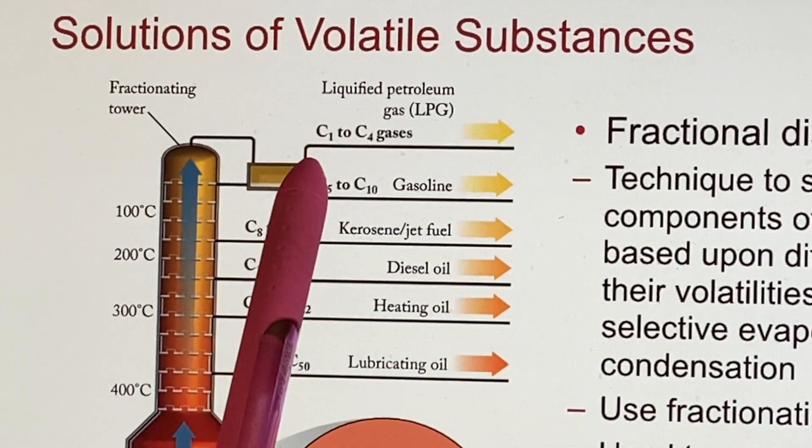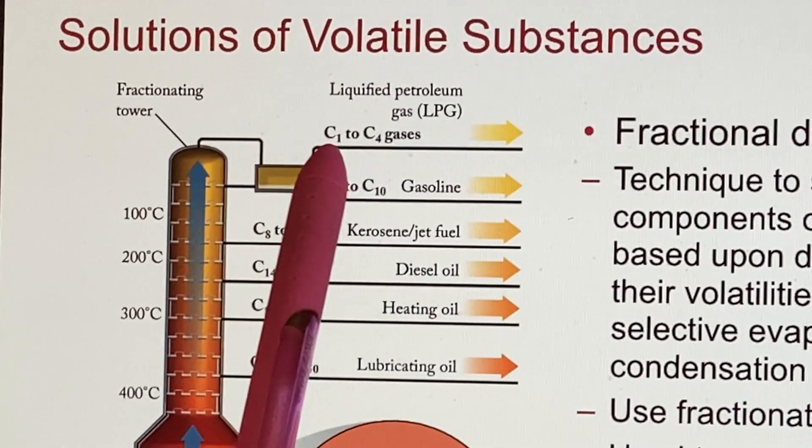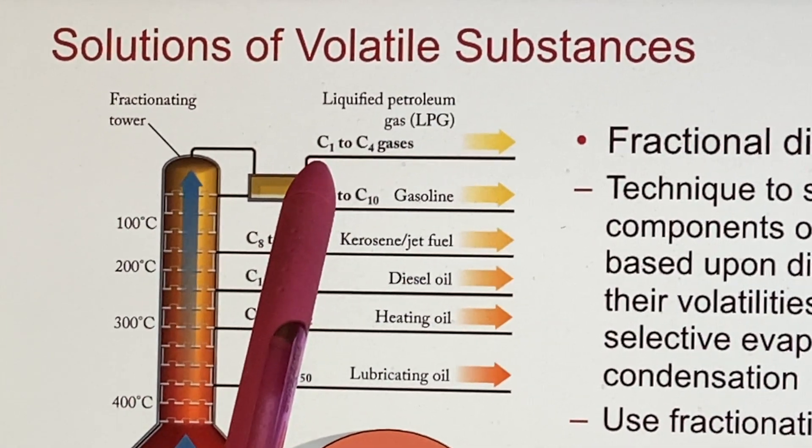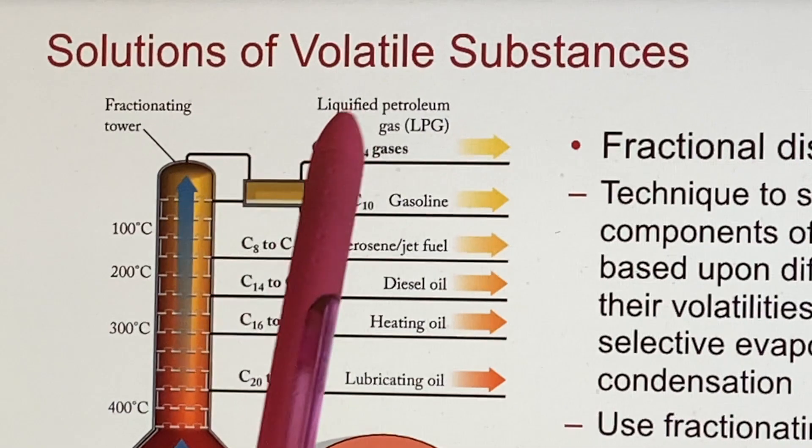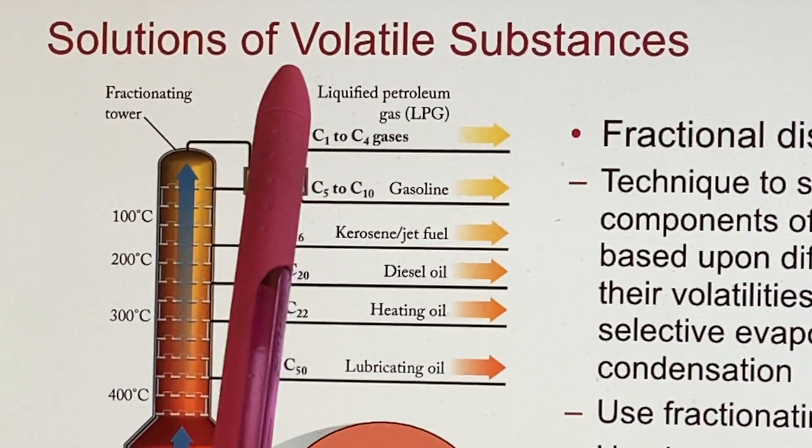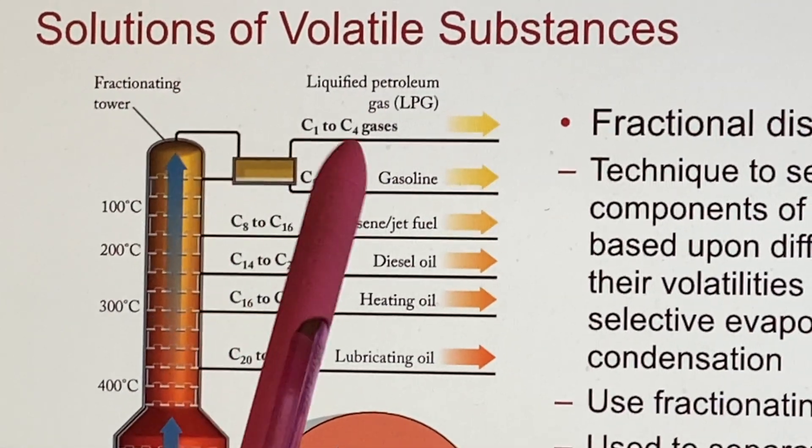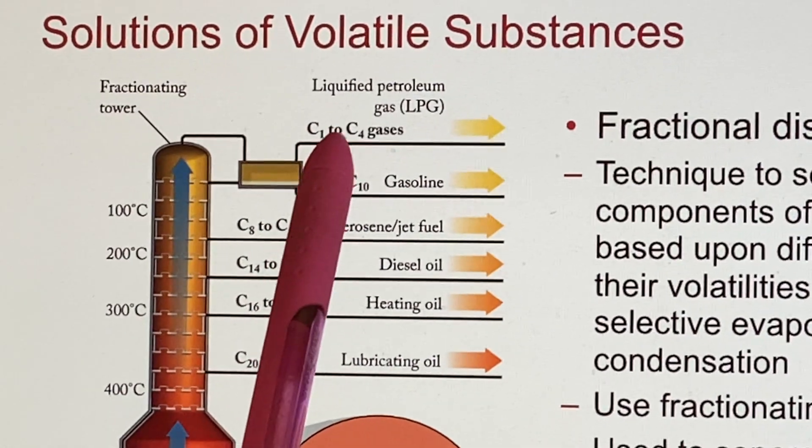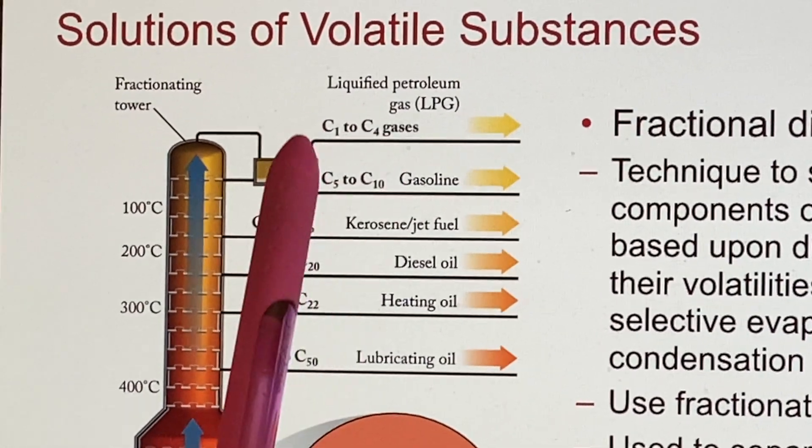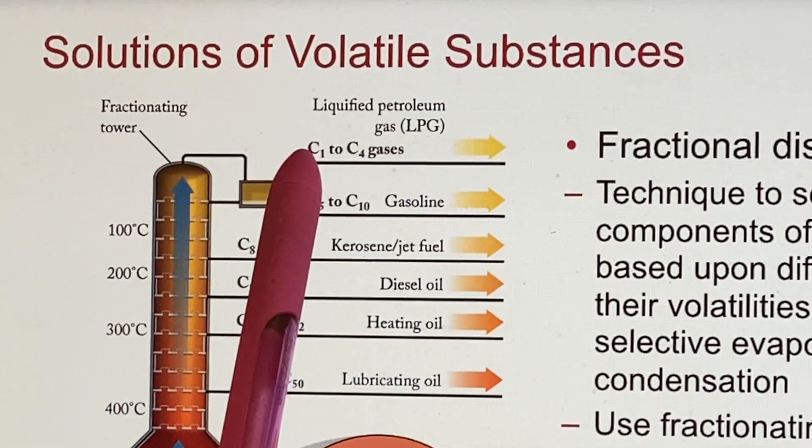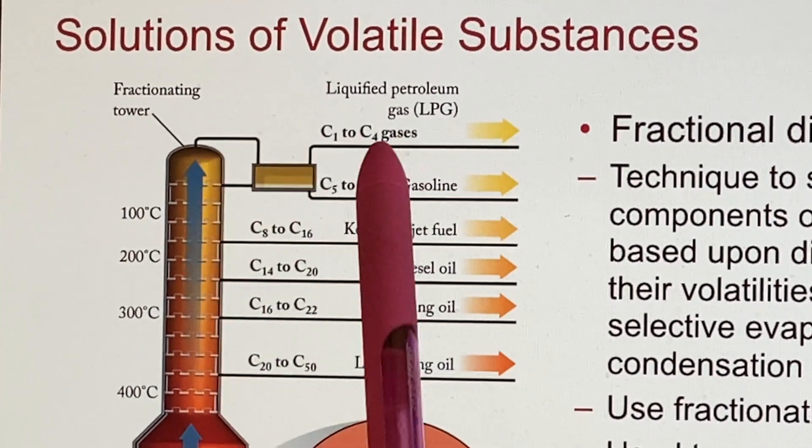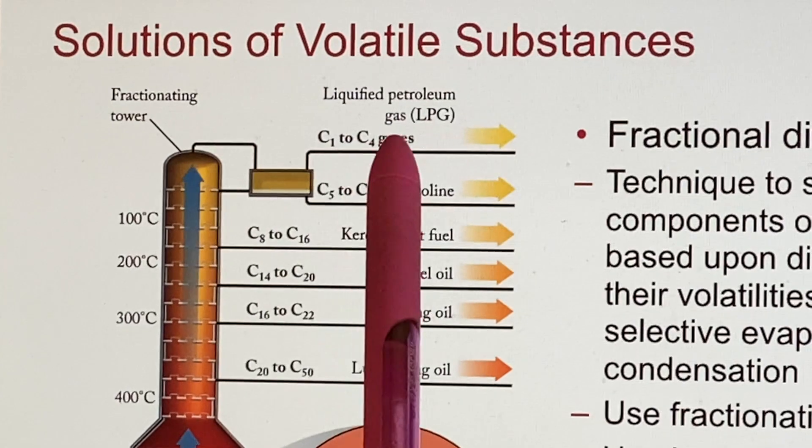And the ones that are always still a gas, well methane is C1, it's got CH4, the chain is literally one long. And then you would have ethane, propane, and butane. Those are the gases that would persist as gases after going through this whole process, now down to room temperature and would still be a gas under normal circumstances.